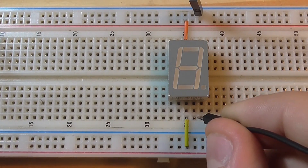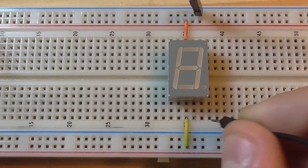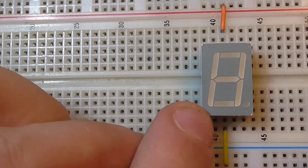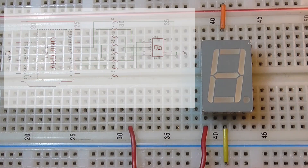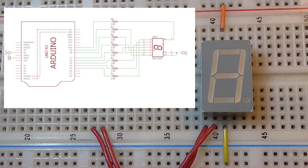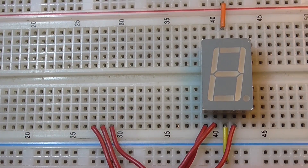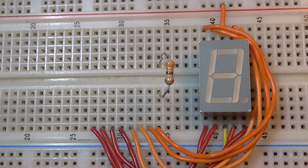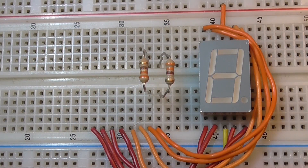Attention: don't connect them directly to ground, you may damage your components. I started by organizing the connections so that the pins from A to DP are in order and easier to access. When you're done, connect a 330-ohm resistor to each pin — this will protect your circuit.